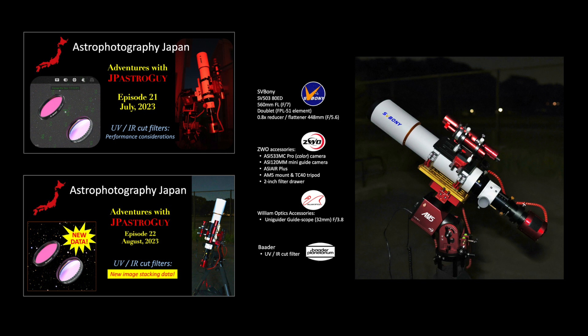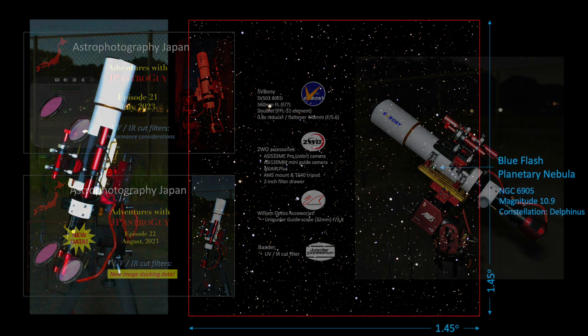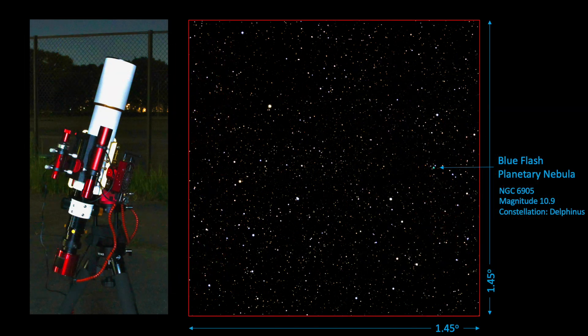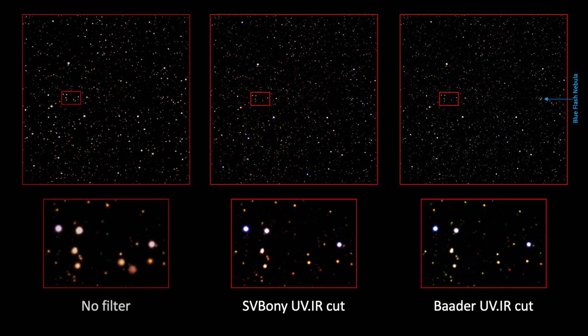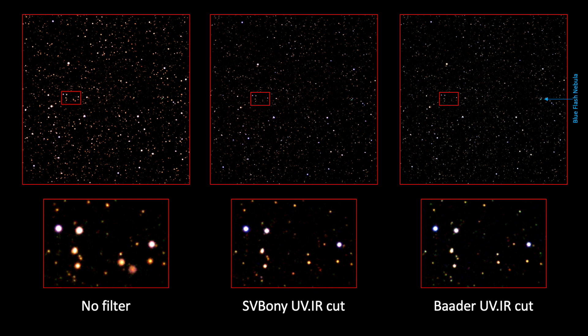During the previous episode 22 video, I took many 30-second images of the sky around the blue flash planetary nebula shown here. And in the previous video, I zoomed into a few regions to compare the performance of the Sveboni and Baader UV-IR cut filters. In fact, I presented this specific data and slide in the last video. But what I did not show was a zoomed box on the no-filter image, which is now revealed here on the bottom left of this slide. I purposely kept it hidden because I noticed this striking star anomaly that I wanted to explore further before I revealed the information.